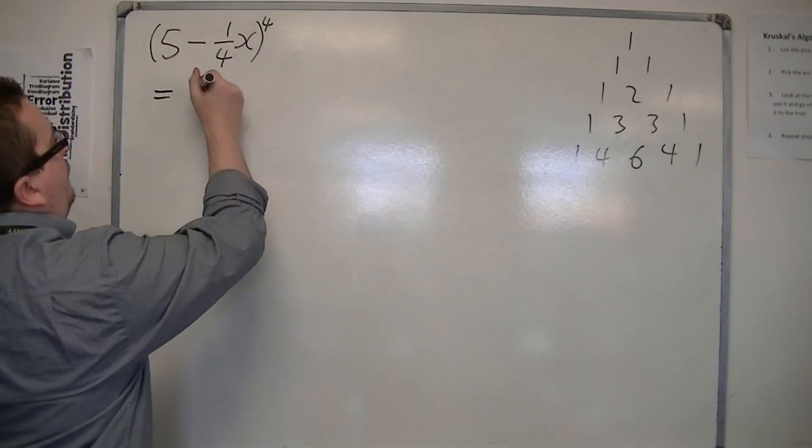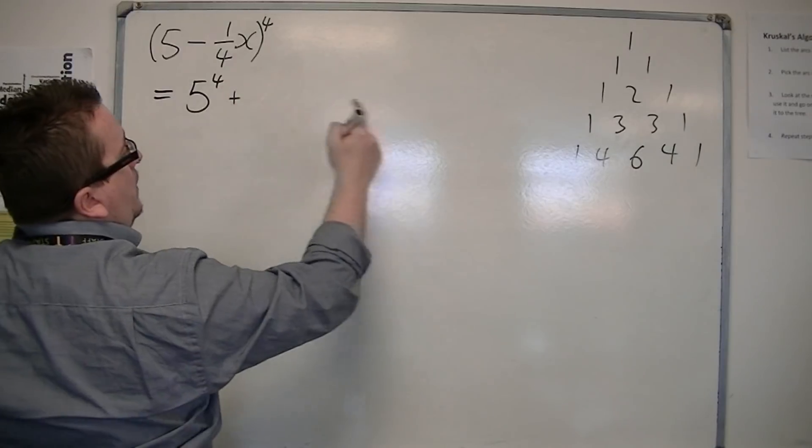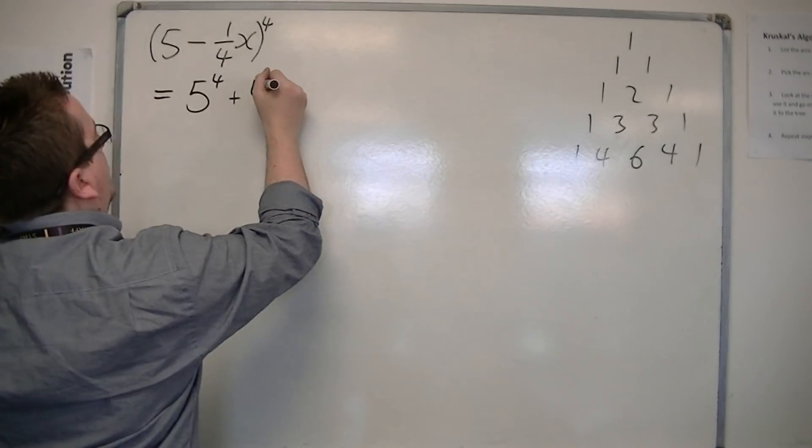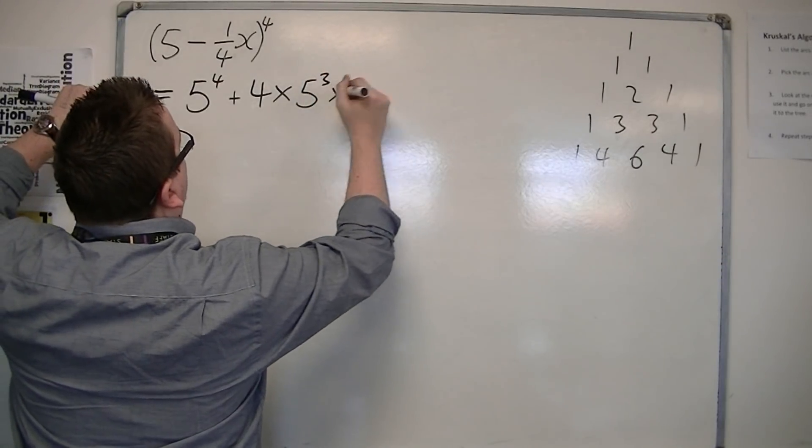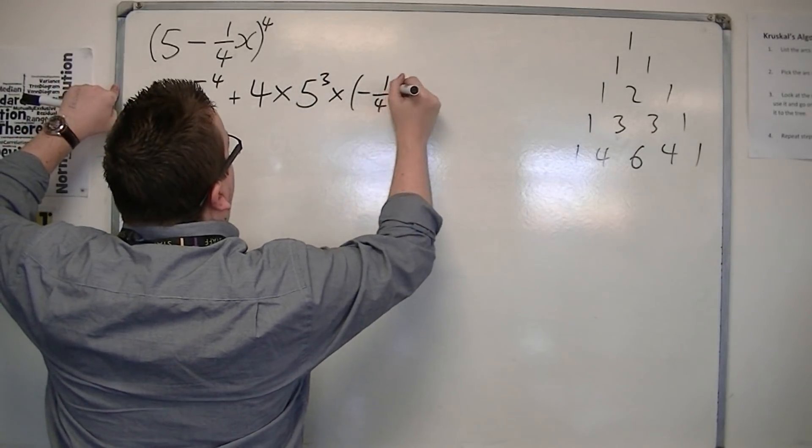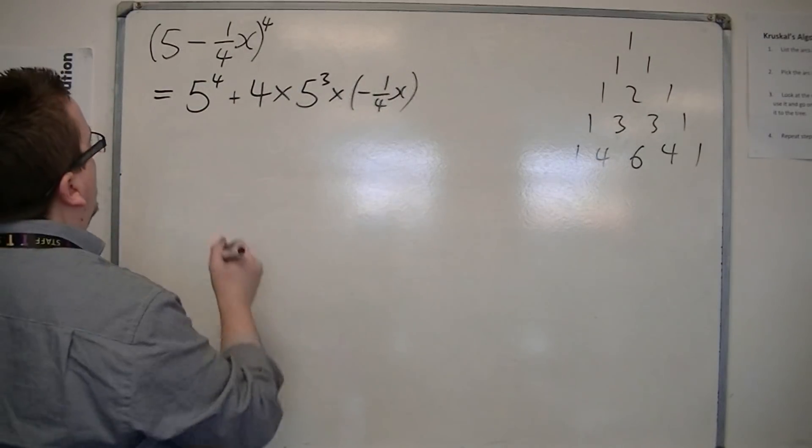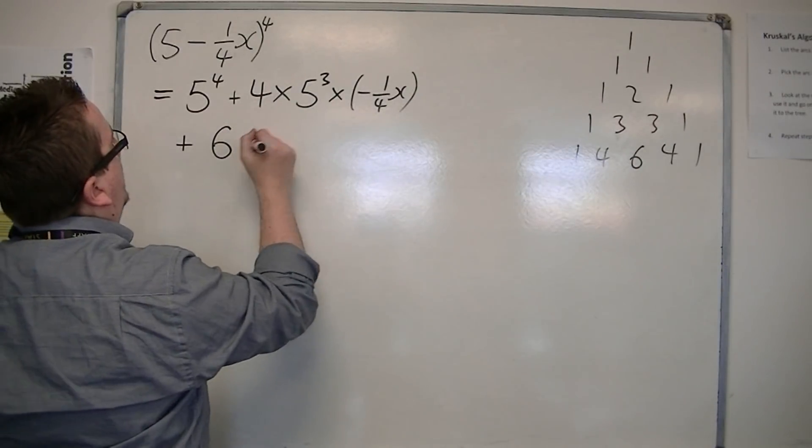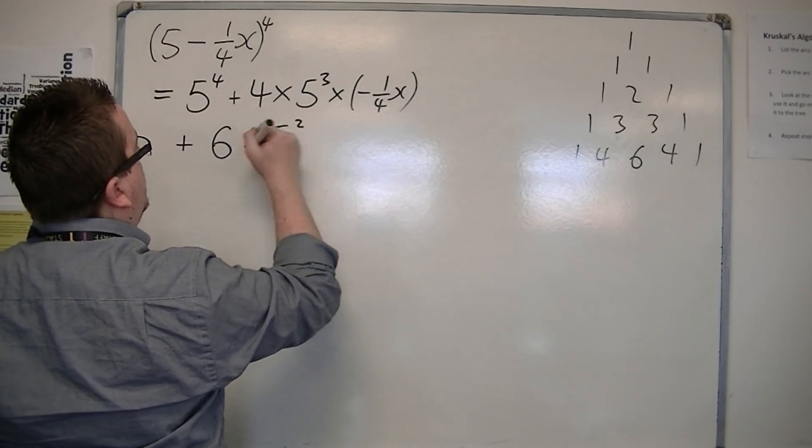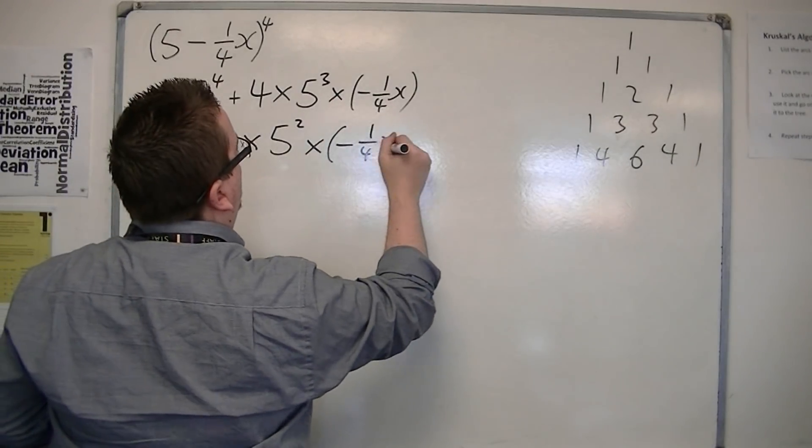So I have 5 to the power of 4 plus 4 times 5 to the power of 3 times minus a quarter x, putting it in a bracket to make sure I don't lose the negative sign, plus 6 times 5 to the 2, because it's reducing in power each time, times minus a quarter x squared.